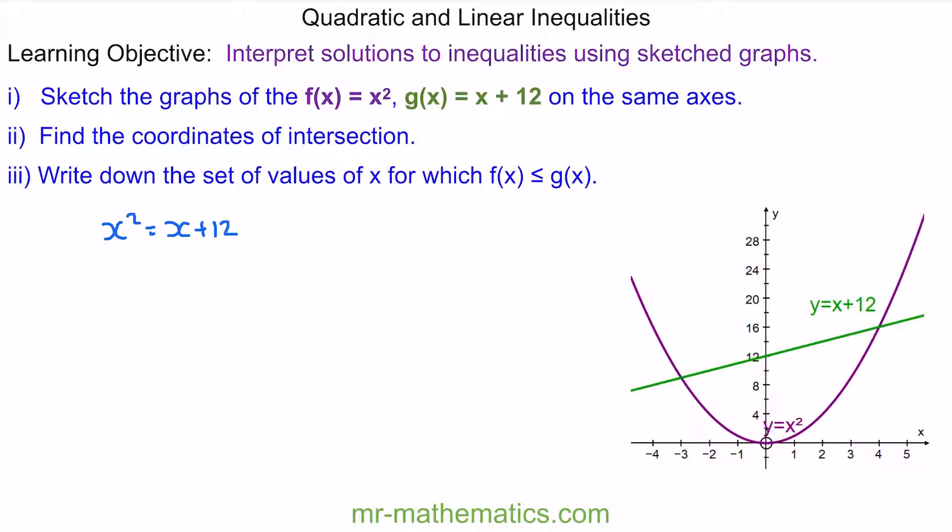Now we can create a quadratic equation which is equal to zero. So x squared minus x minus 12 is equal to zero. We can factorize it where we get x minus 4 and x plus 3.